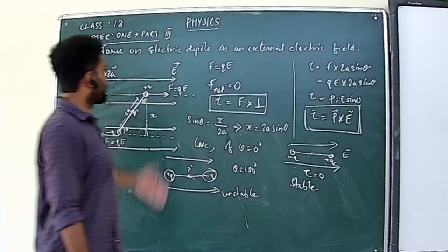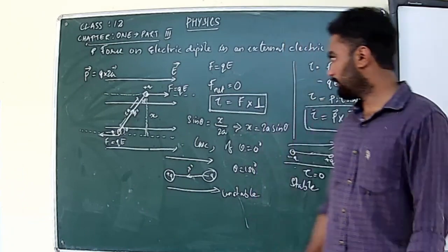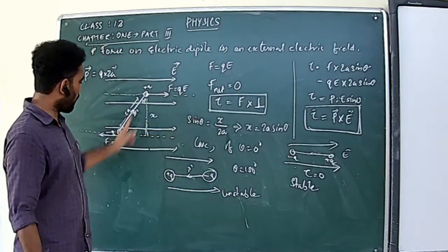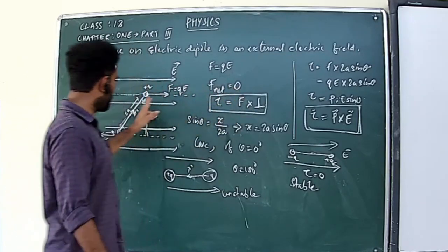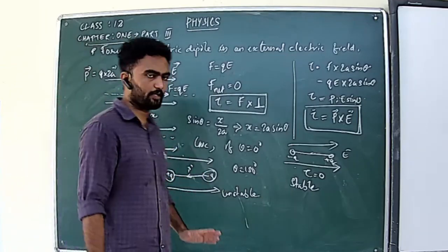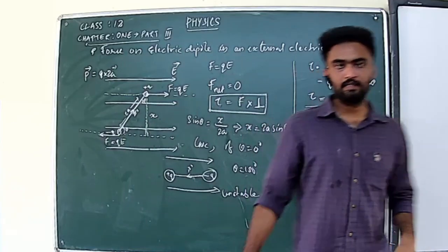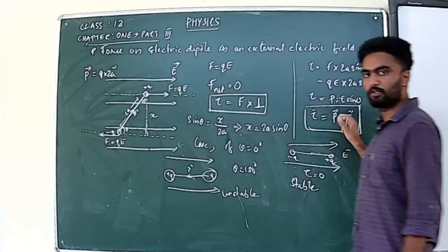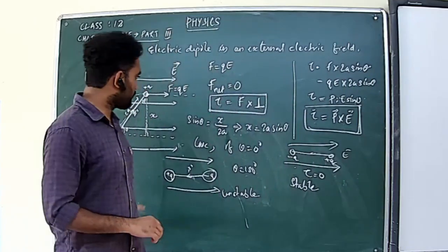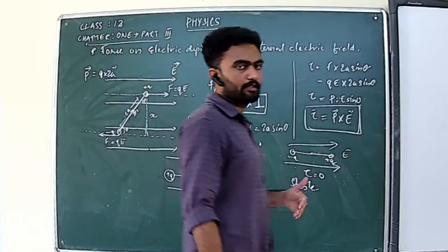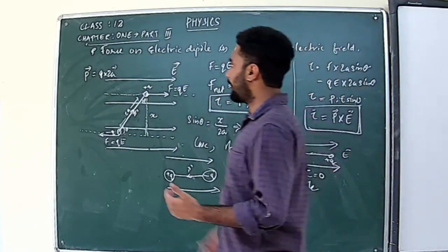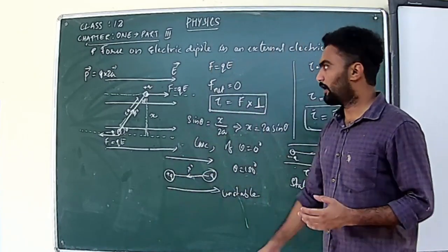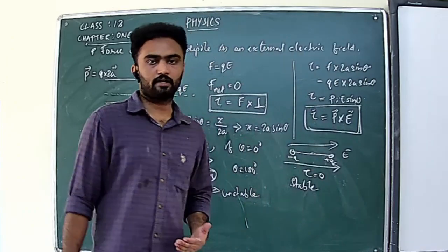In summary, when an electric dipole is placed in an external electric field, it experiences forces of QE on each charge that cancel to give zero net force, but these opposite forces create a torque = PE sinθ = P × E, causing rotation. We covered two topics today: the electric field on the equatorial line of a dipole, and the force and torque on a dipole in a uniform electric field. Thank you.